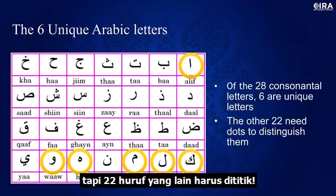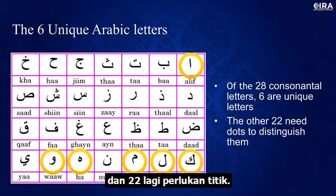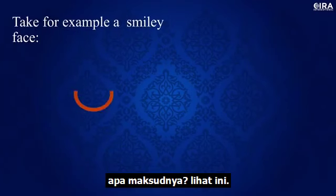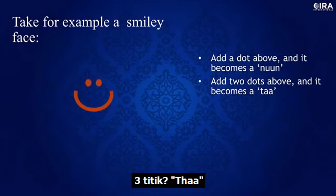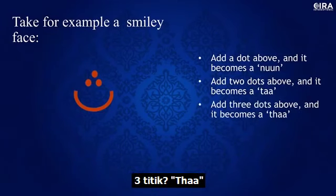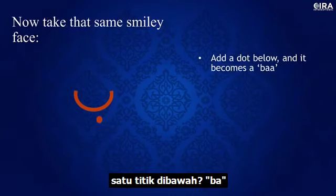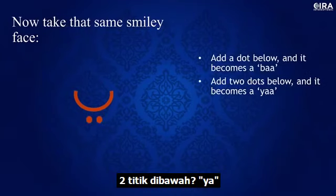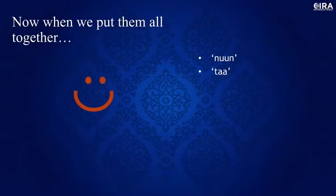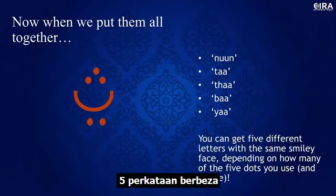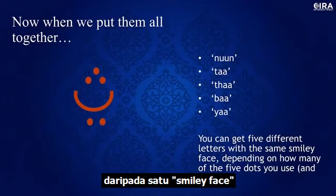The other 22 absolutely need the dots. To illustrate, take a smiley-face shape — one basic form. With no dots it's ambiguous, but add one dot below and it's Ba; two dots below, Ya; two dots above, Ta; three dots above, Tha. Five completely different letters from just one little shape. Can you see why dots are absolutely important? This changes everything.